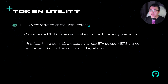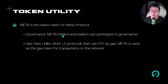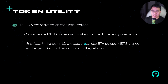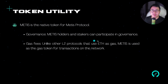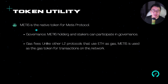Moving on to token utility — MATIS is the governance token for the MATIS ecosystem. What's special is that MATIS is also used as the gas fee, unlike other Layer 2 ecosystems like Optimism, Arbitrum, and Boba, which all use ETH as gas. MATIS is the only Layer 2 right now that uses its own governance token as gas, which can be very bullish for MATIS compared to other Layer 2s that either don't have a token or use ETH as gas.